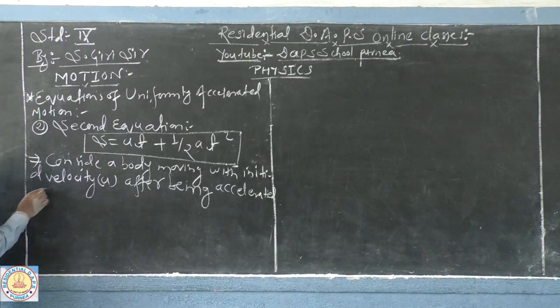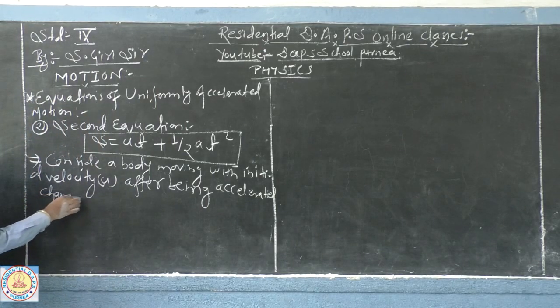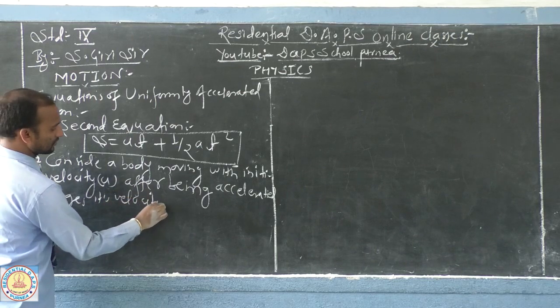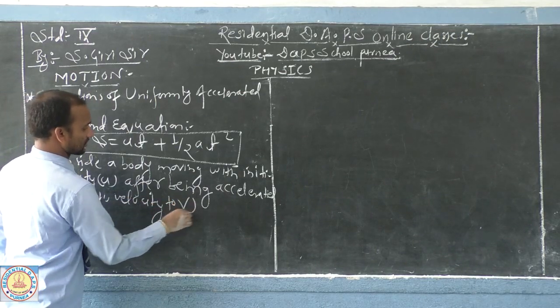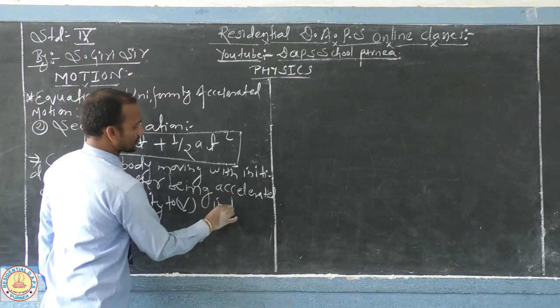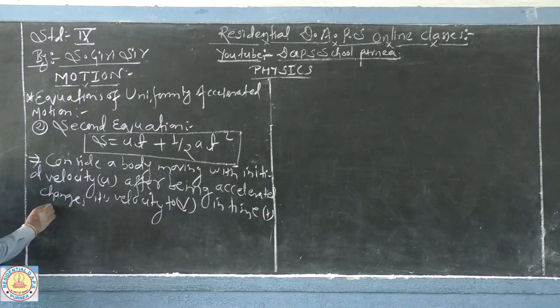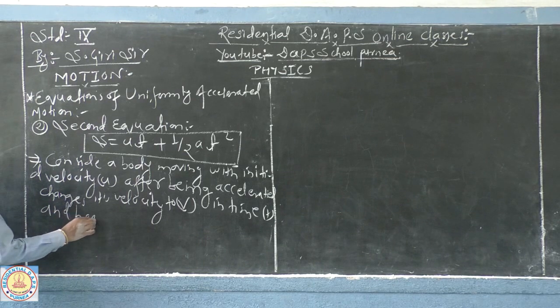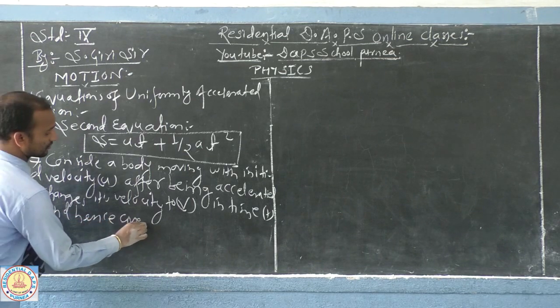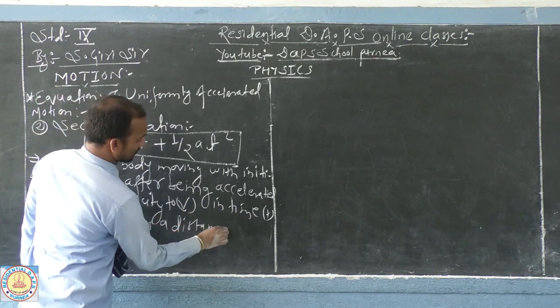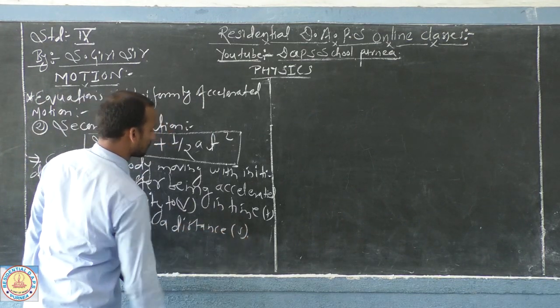It changes its velocity to v, which is the final velocity in time t, and hence covers a distance. Distance is small s.